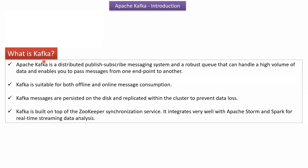Now we will see what Kafka is. Apache Kafka is a distributed publish-subscribe messaging system. It is a robust queue that can handle a high volume of data, enabling you to pass messages from one endpoint to another. Kafka is suitable for both offline and online message consumption. Kafka messages are persisted on the disk, and messages are replicated within the cluster to avoid data loss. Kafka is built on top of the Zookeeper Synchronization Service and integrates very well with Apache Storm and Apache Spark for real-time streaming data analysis.